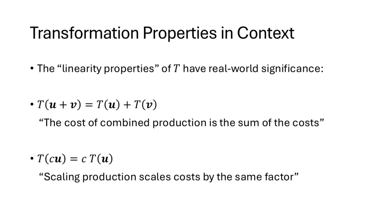T(u + v) = T(u) + T(v) tells us that the cost of combining production is the sum of the costs — we can add production vectors first and then compute cost, or compute costs separately and add. And T(cu) = c·T(u) tells us that scaling production by a factor is the same as scaling the cost: we can scale production and then compute cost, or compute cost and then scale. Linearity means we can do these operations in either order and get the same result.